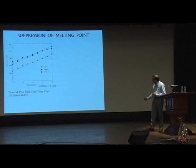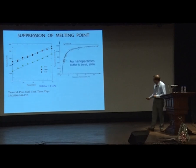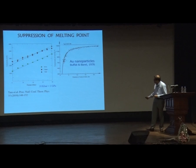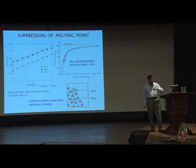A melting point has an obvious pressure dependence — as you increase the pressure, the melting point goes up by about 20% or so. But if you take particle size as the variable, then the melting point can be changed by almost a factor of two or three by decreasing the particle size. This happens because you have a larger amount of surface, and the surface atoms are easy to get rid of from the solid, so you need less energy for the surface atoms to get evaporated.